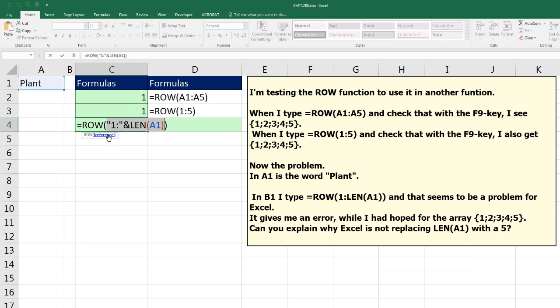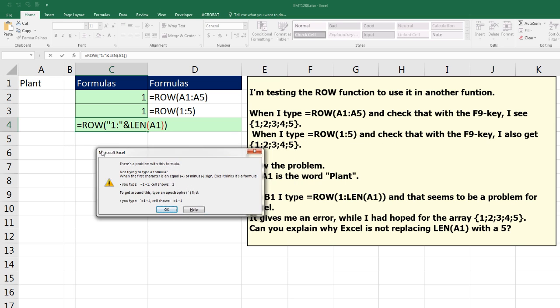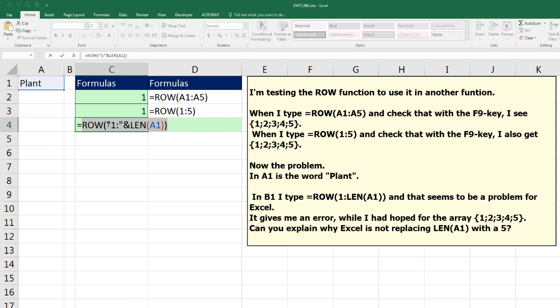Now when I highlight this little bit right here and hit F9, there's that 1 to 5. Control-Z. So I'm just going to try it. I'm going to hit Enter. I still get an error. Escape.